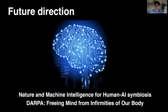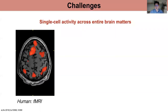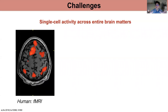Before we go to the technology platform, let's discuss what challenges we need to address to build the next generation brain-machine interface. The first challenge is that single-cell activity across the entire brain really matters. Unlike a computer chip, when the brain functions, it recruits activity from neurons distributed across the entire 3D volume of the brain. This functional MRI imaging of a human patient shows the brain regions that are active — you can see it recruits activity from multiple regions distributed across the entire 3D volume.